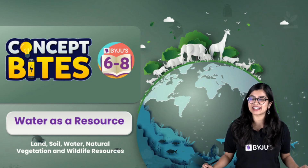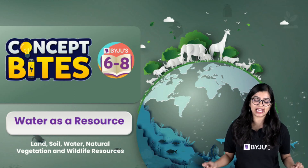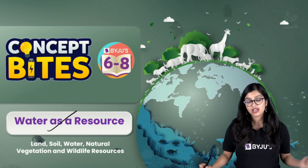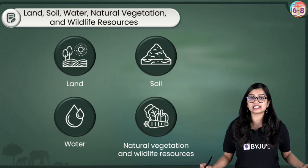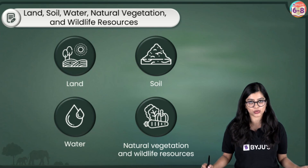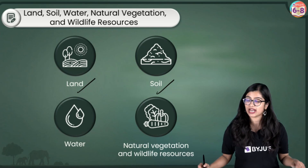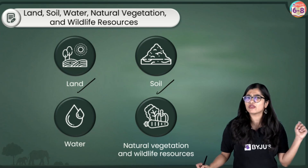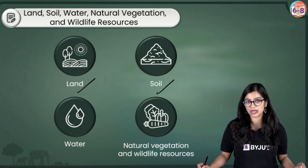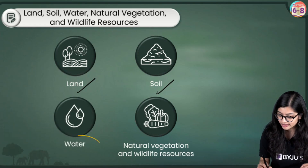Hey there and welcome to Baiju's 6th, 7th and 8th grade channel. I'm your teacher Aishwarya and in this video of concept bites, we are going to be exploring the topic water as a resource. This is a very important subtopic from the chapter land, soil, water, natural vegetation and wildlife resources. We have covered land as a resource and soil as a resource in our previous videos — links are available in the description below. Today we are going to be describing and looking at water as a resource.